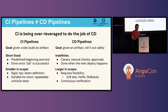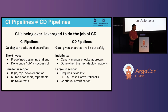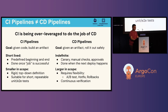What most people end up doing is using their CI system to drive their promotion pipeline. But fundamentally, CI and CD have different goals, and we feel that these CI systems are being over-leveraged, trying to do the work of CD. For CI, your primary goal is: given some code, build and produce an artifact. With CD, your goal is: given an artifact, roll it out as safely as possible. CI pipelines tend to be short-lived — you have this predefined beginning and end, and your pipeline is done once your job completes. When you define your CI pipeline, you do it in this rigid, top-down definition, like a Jenkins file. This is fine for short, repeatable tests,